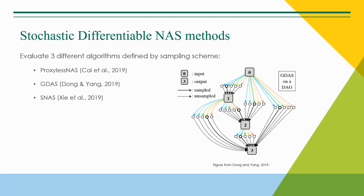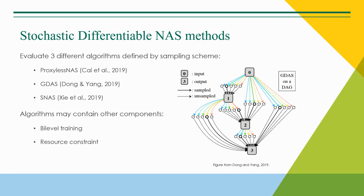To this end, we've defined three different recently released NAS algorithms by the methods used to sample as well as calculate the architecture weight gradient. The original implementations of these algorithms also include or do not include some other design components which we have experimentally ablated. These components are bi-level training, which means alternately training the shared model weights on the training data and the architecture weights on the validation data, and resource constraints, which is regularization based on a differentiable estimate of the operation computational cost.